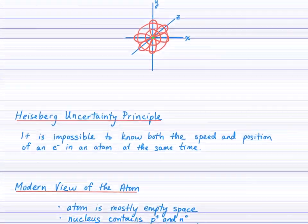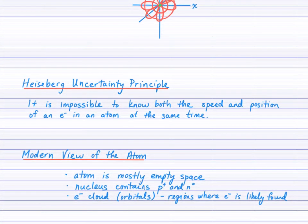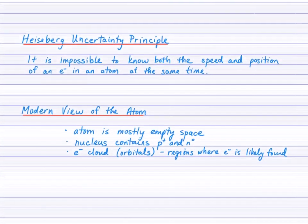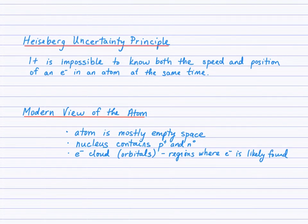So the last person we look at with respect to the quantum model is Heisenberg. And Werner Heisenberg showed that it was impossible to know both the speed and position of an electron in an atom at the same time. This is known as the Heisenberg Uncertainty Principle.